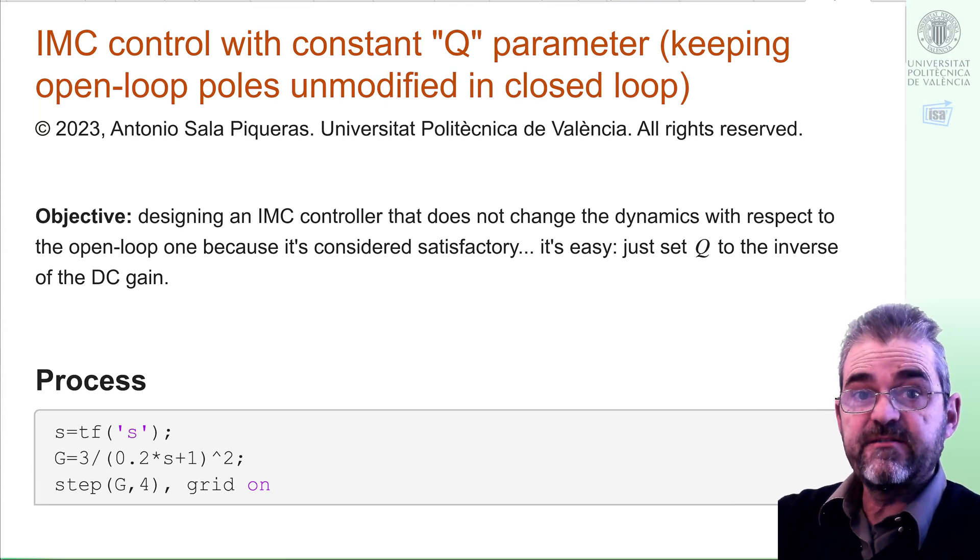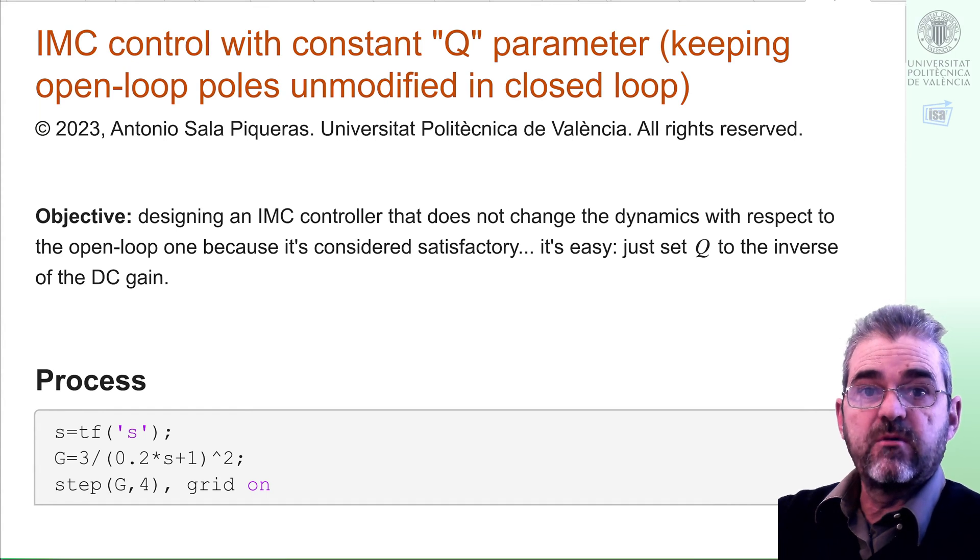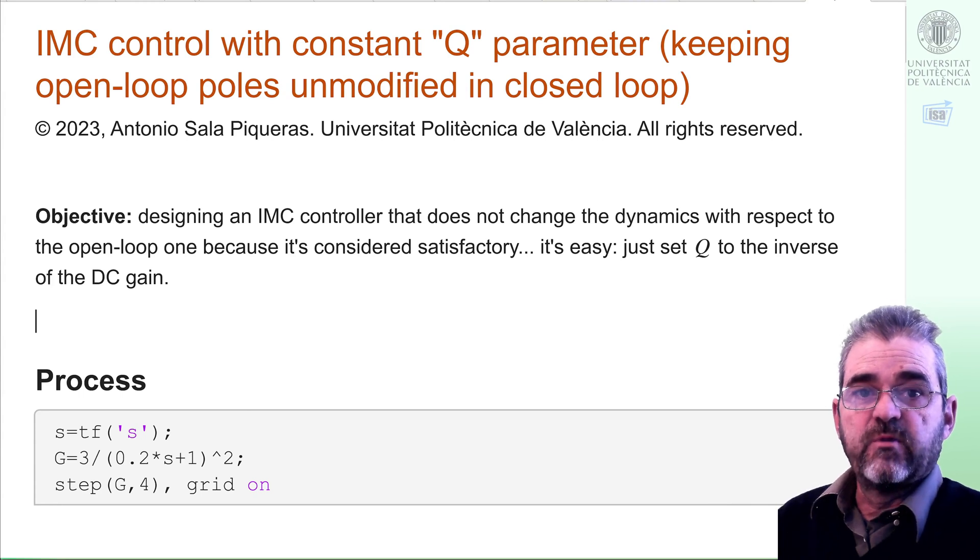Hi, I'm Antonio Selle. In this video we are going to design a controller for a fast process. We will use internal model control and our goal will be just keeping the poles at the open location because it's fast enough. In that case, the IMC parameter Q is easy—it's just constant, the inverse of the DC gain. We'll analyze the setpoint and disturbance response of such a controller.